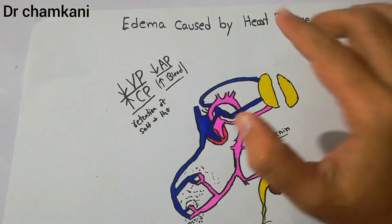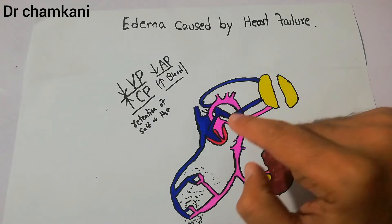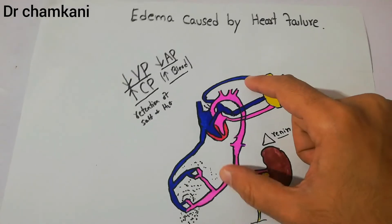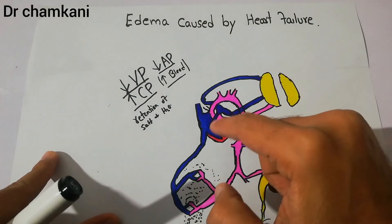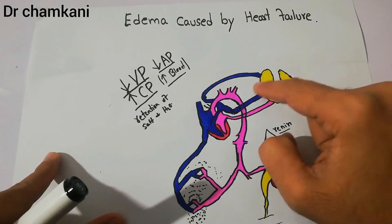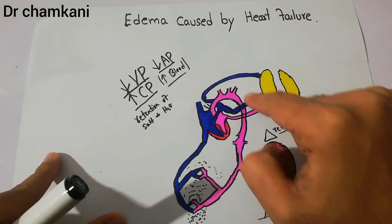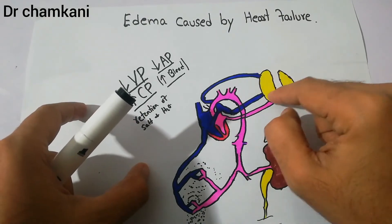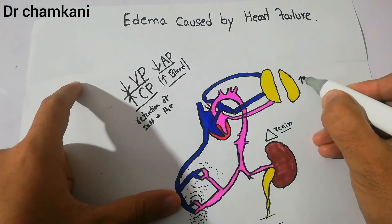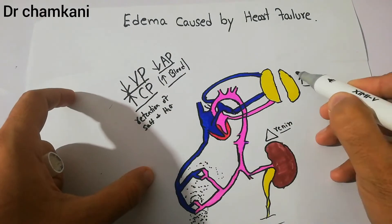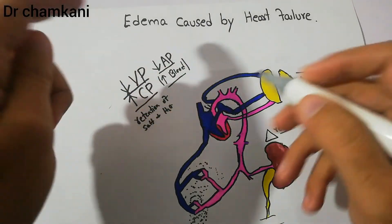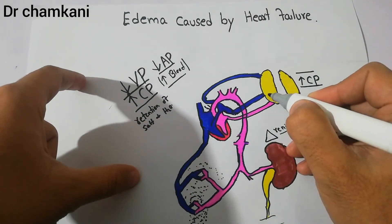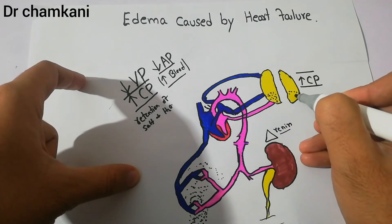Now, if the right side of the heart is normal and only the left side has failed, the right side will keep pumping deoxygenated blood into the lungs. This blood keeps accumulating in the lungs because the left side of the heart cannot pump it back into the systemic circulation. Due to this left heart failure, the capillary pressure in the pulmonary vessels increases, filtration increases, and fluid starts accumulating in the lungs, leading to pulmonary edema.